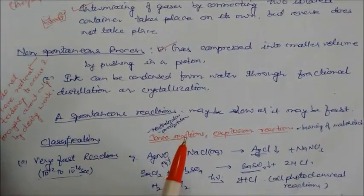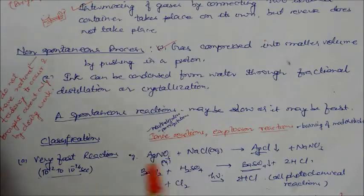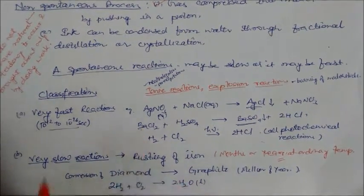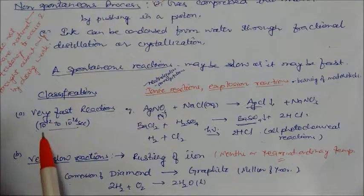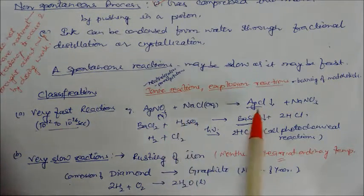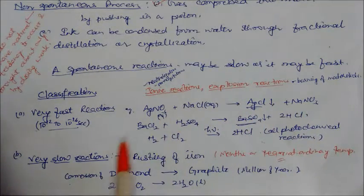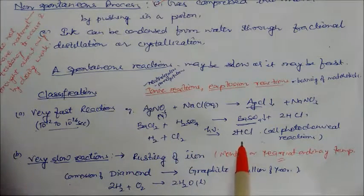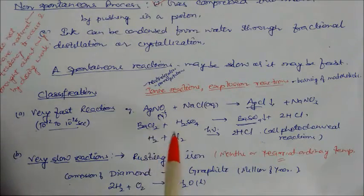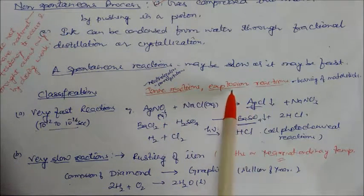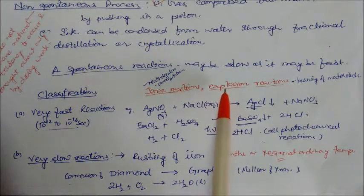Spontaneous reactions may be slow or fast. Some reactions are very fast, some are very slow, and some are moderate. Very fast reactions take place in approximately 10⁻¹² to 10⁻¹⁶ seconds. For example: silver nitrate reacting with NaCl immediately gives AgCl precipitate; barium chloride reacting with H₂SO₄ gives barium sulfate and HCl; hydrogen reacting with Cl₂ gives HCl. All photochemical reactions are very fast. Neutralization reactions, precipitation reactions, ionic reactions, and explosion reactions are also very fast.